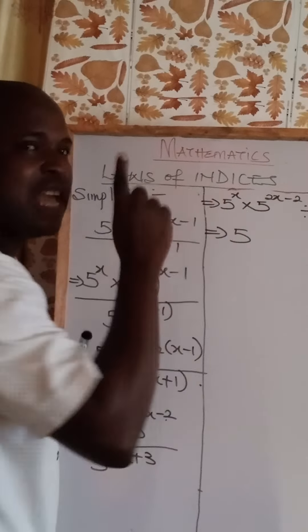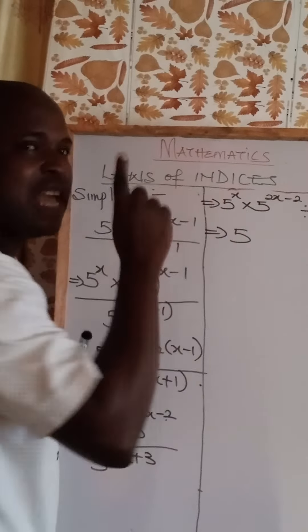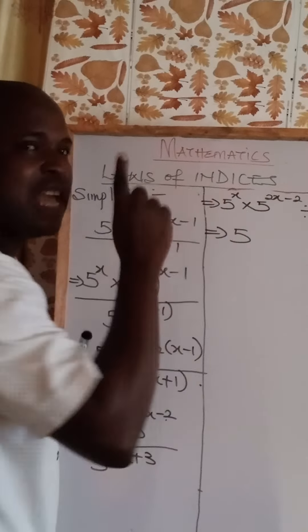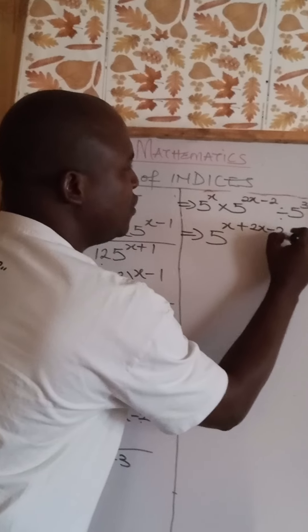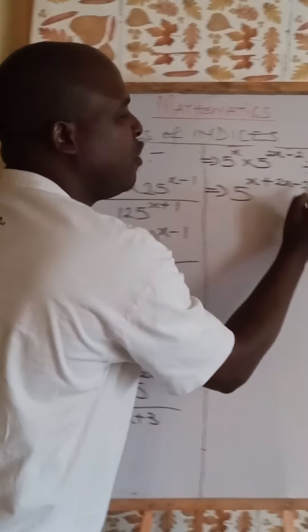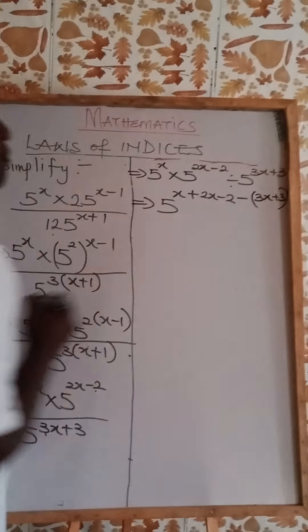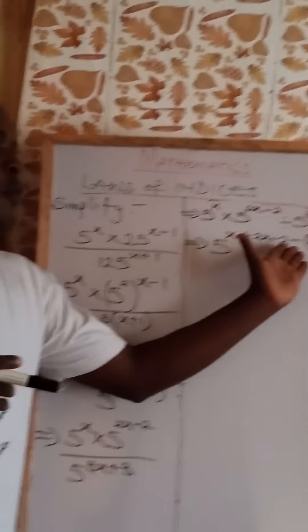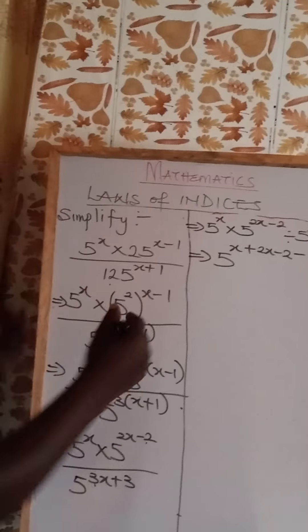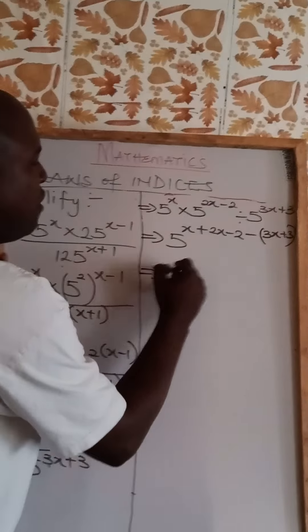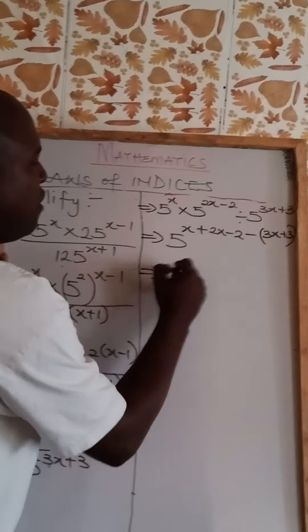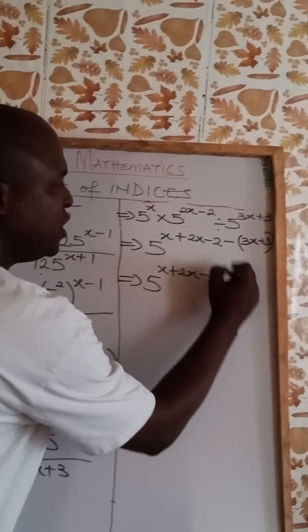The bases are all the same, so I am going to take one base out. Where I have a multiplication sign, I am going to use an addition sign for the powers. And where I have a division sign, I will change it to a minus sign. That means I am going to have x plus 2x minus 2, minus — and you have to be careful here: anything after the negative sign must be placed in a bracket — so I have minus (3x plus 3).